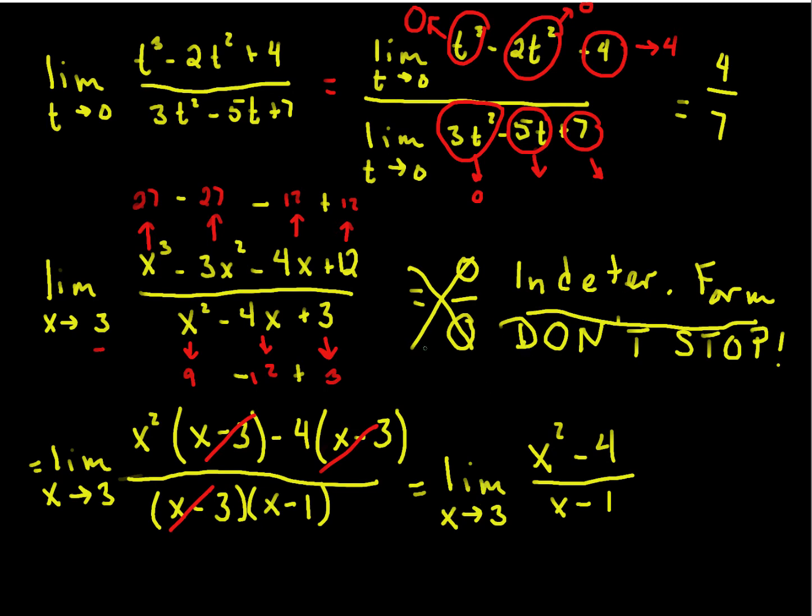If x approaches 3, this is approaching 9, and 4 is staying at 4. x is approaching 3, and 1 is staying at 1. So, the top looks like 9 minus 4. The bottom looks like 3 minus 1. So, this is 5 halves. And there's our answer. The limit is equal to 5 halves.